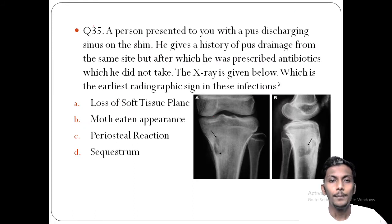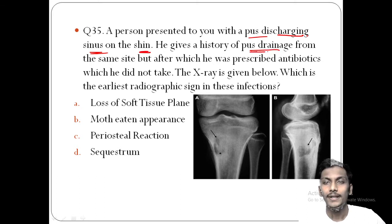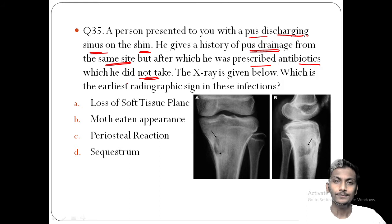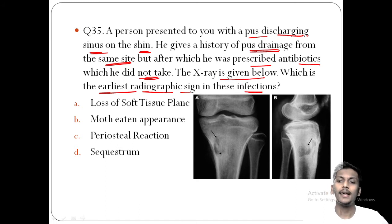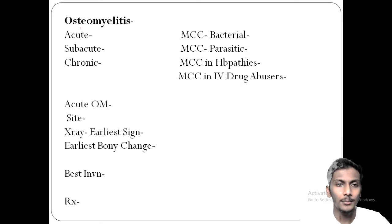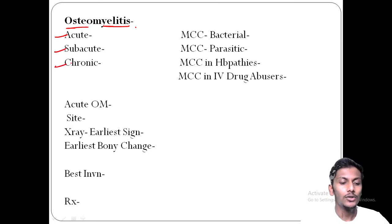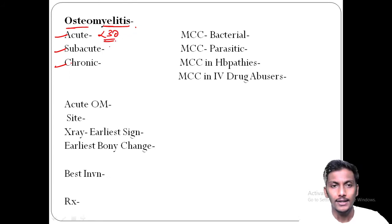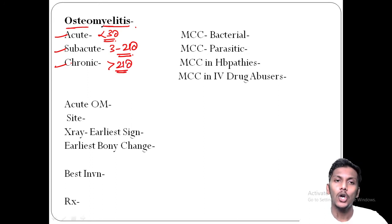Question 35: A person presents with a pus-discharging sinus on the shin. He had prior pus drainage from the same site but was prescribed antibiotics which he did not take. The x-ray is given. The earliest radiographic sign in bone infections (osteomyelitis) is asked. Osteomyelitis is classified as acute (less than 3 days), subacute (3–21 days), and chronic (more than 21 days).